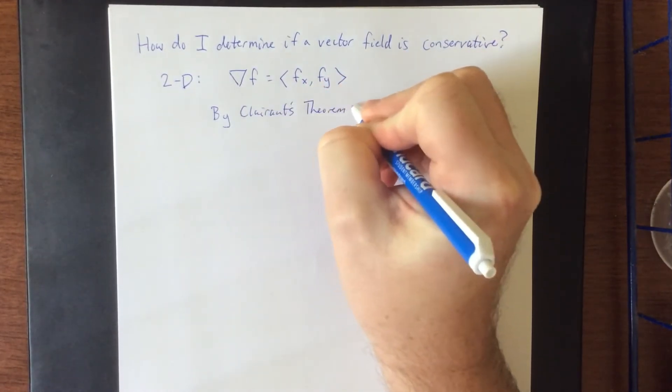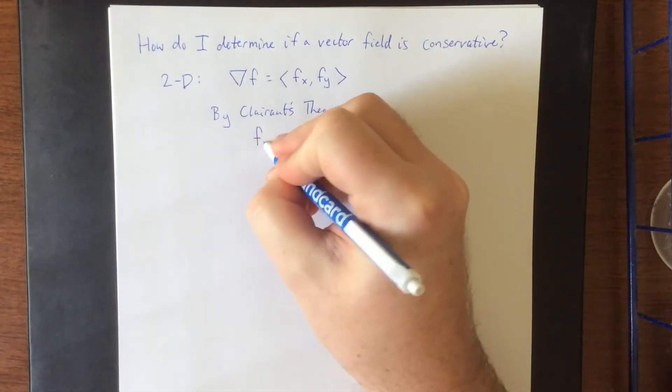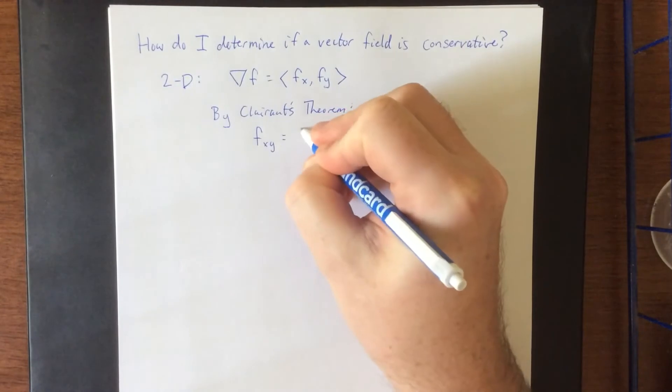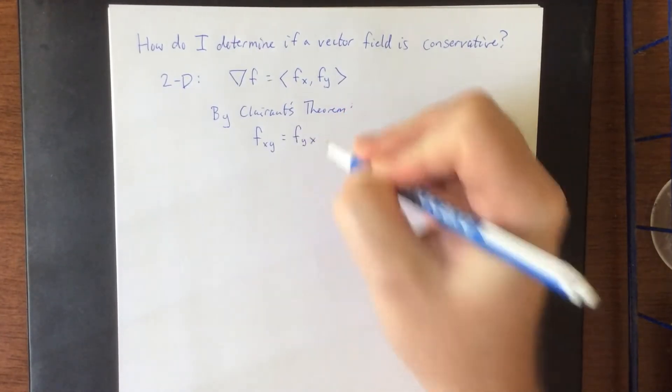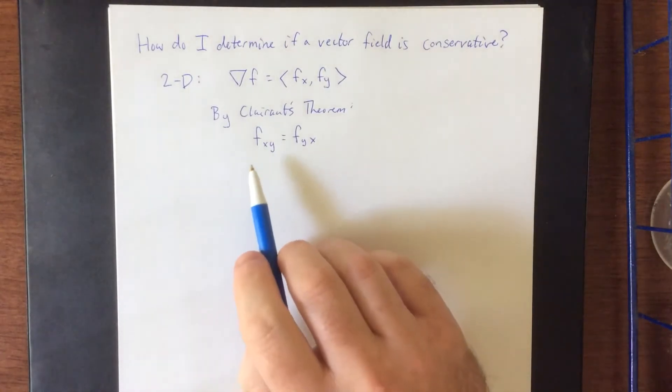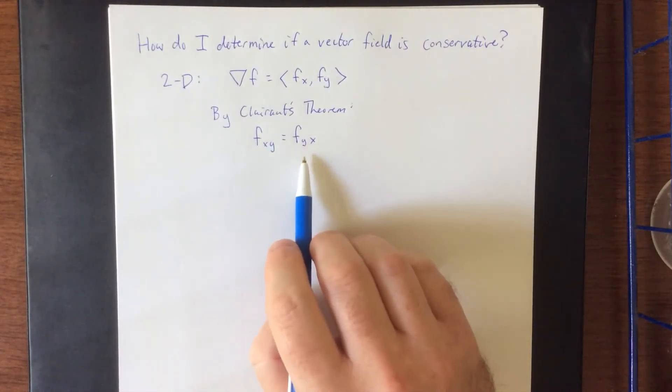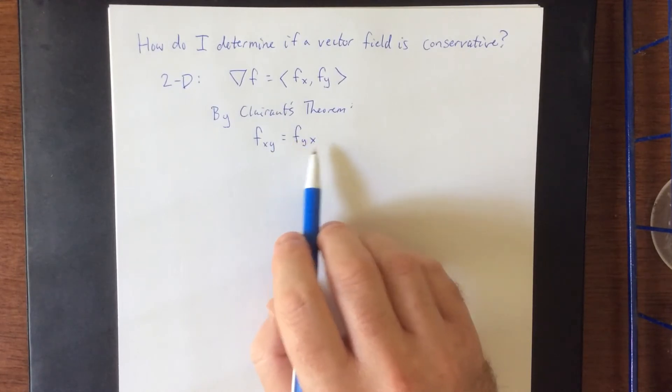Now according to Clairaut's theorem from back in our discussion of partial derivatives, the mixed partial derivatives in either order should be the same. Now what that means is if I differentiate f with respect to x then y, that should be the same result as if I differentiate f with respect to y then x.